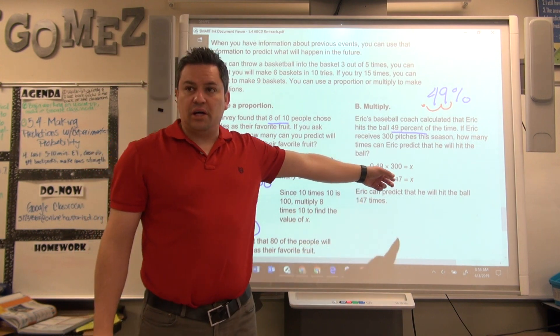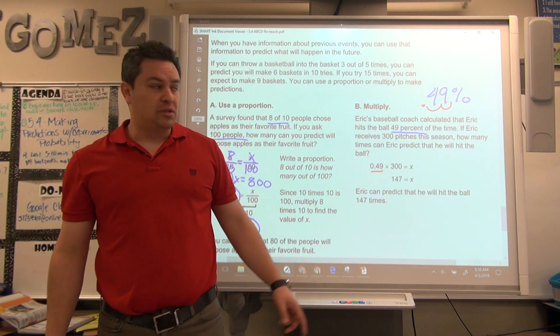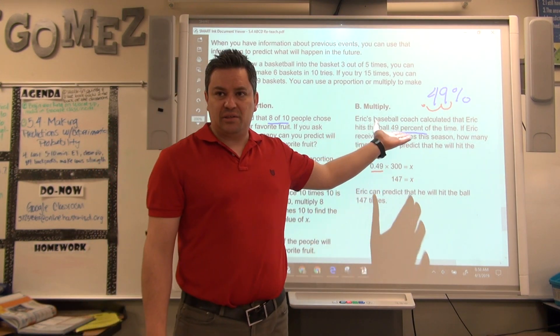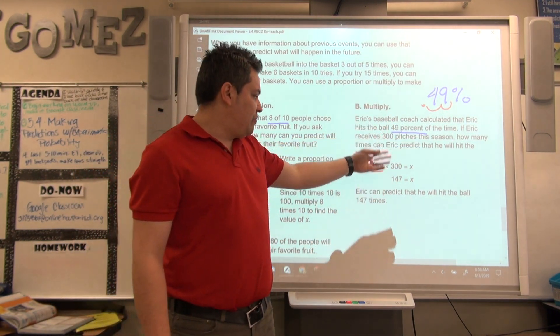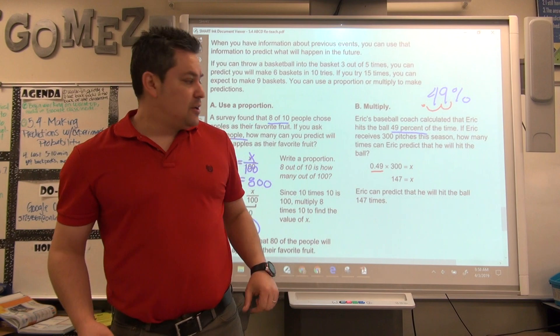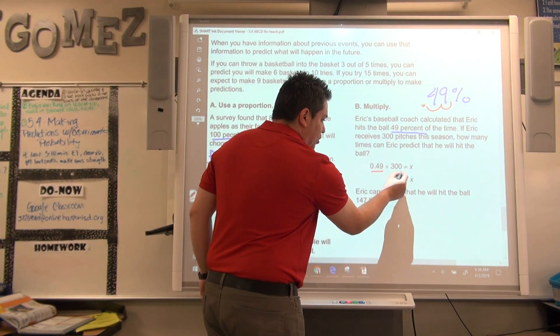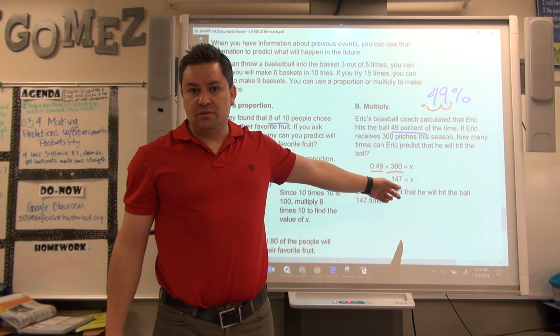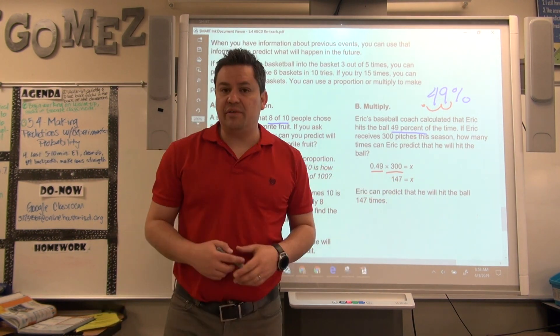So, convert to decimal and then multiply by the amount, which is 300, and you get 147, which we're kind of expected, right? 150, 147, really close. When you convert to decimal and multiply the amount, that's the actual prediction. 147 times.